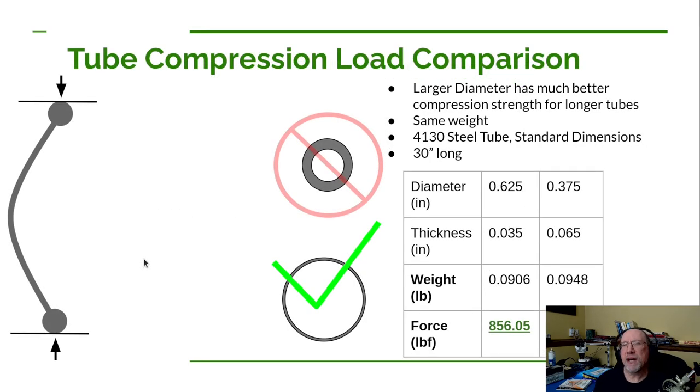Now I'd like to try to get us to have a more intuitive feel for how the diameter of the tube affects the load that it can handle, the compression load. The example I'm going to use is n equals one. So it's pinned on each end. And I'm going to use some standard diameters and thicknesses for tubes for 4130 steel tubing that you can typically find for airplanes. It's going to be 31 inches long, and I'm going to pick some dimensions that will give us about the same weight.